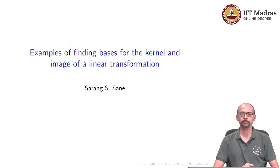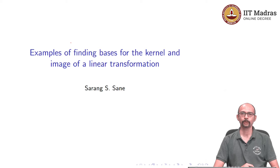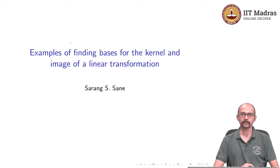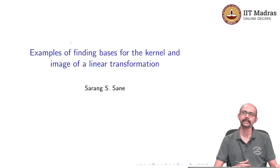Hello and welcome to the Maths 2 component of the online BSc program on Data Science and Programming. In this video, we are going to continue from the previous video where we discussed the theory about the relationship between images and kernels for a linear transformation with the column space and null space of the matrix that we obtain after we fix ordered basis for the domain and the codomain. We are going to do a bunch of examples where we implement what we have seen earlier, and we will find basis for the kernel and the image using the fact that we can find basis for the column space and the null space using row reduction.